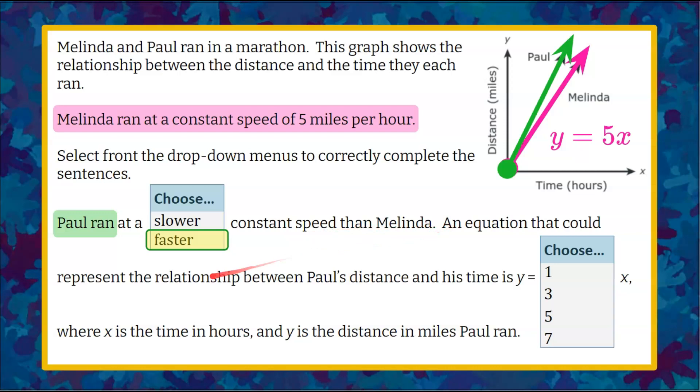So an equation that could represent the relationship between Paul's distance is, we know that Paul's constant of proportionality or slope, his unit rate, is greater than 5, seeing as his line is steeper.